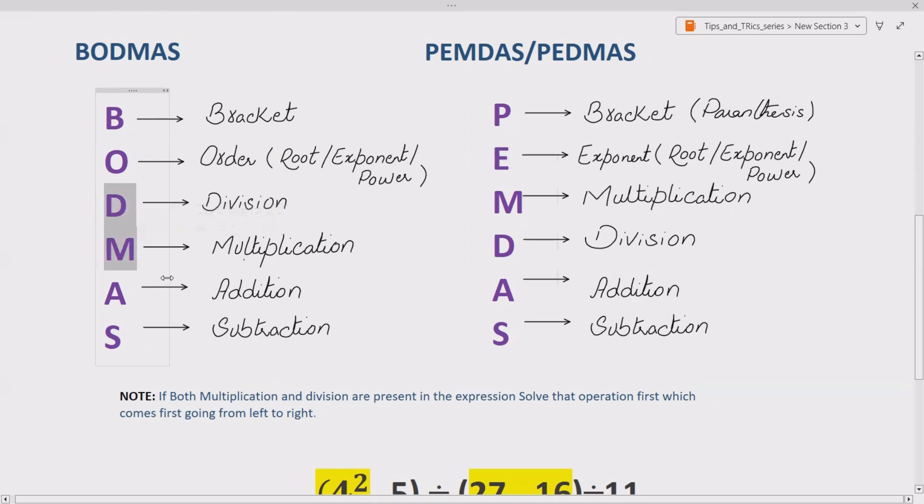Please note that division multiplication is in the BODMAS, whereas PEMDAS says multiplication and division. Actually, multiplication and division have the same level of preference. What does it mean? It means, if both multiplication and division are present same time in your expression, solve that operation first, which comes first when going from left to right.